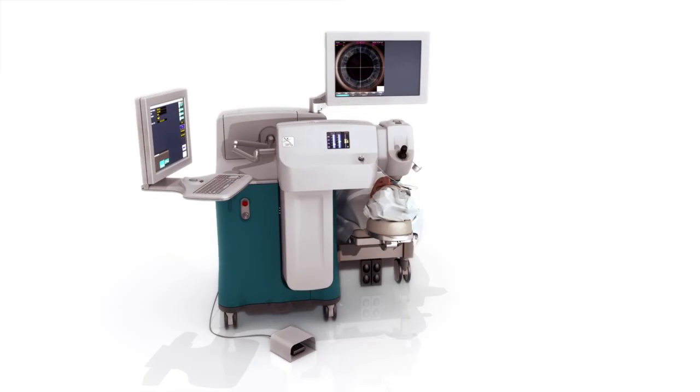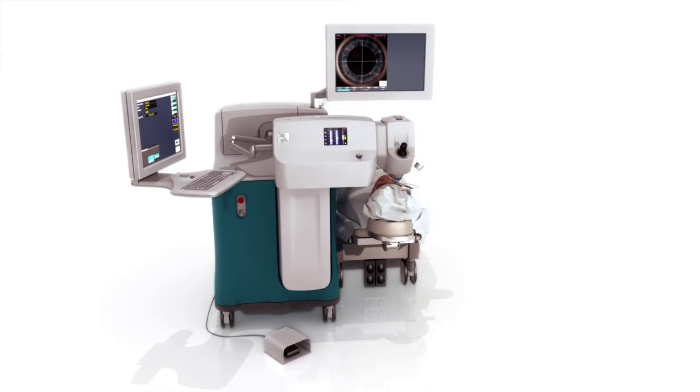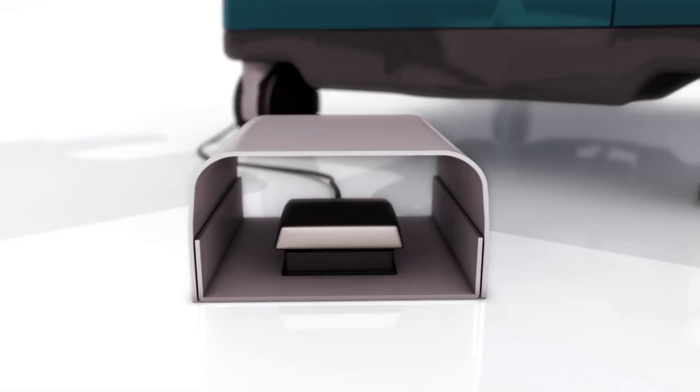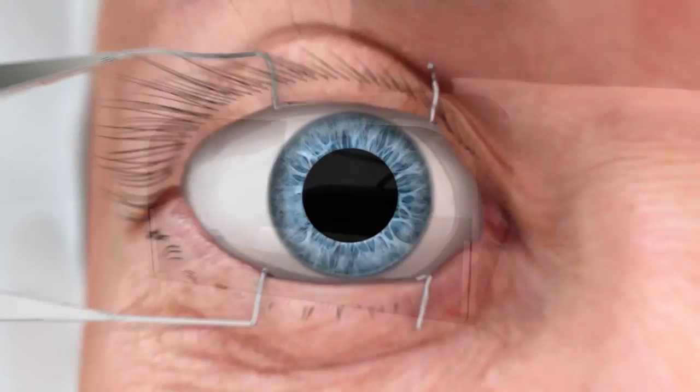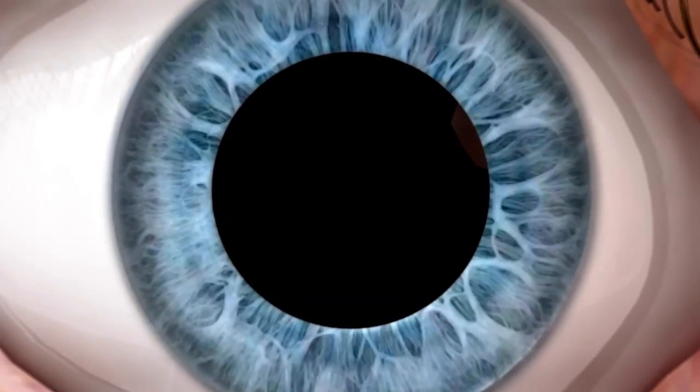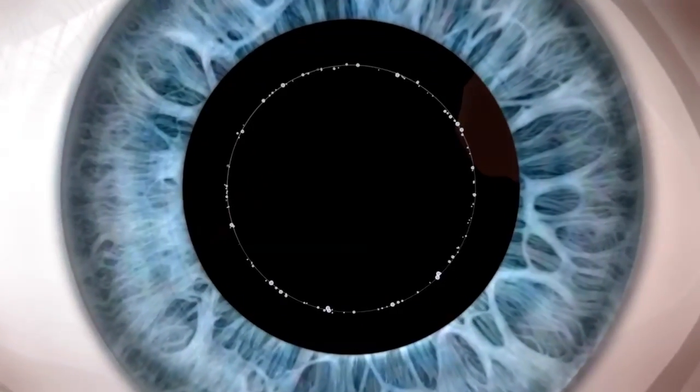After each cut to be performed has been programmed into the system, the LensX laser foot pedal is depressed and the procedure begins. First, the capsulotomy is performed, creating a precisely centered capsular axis.